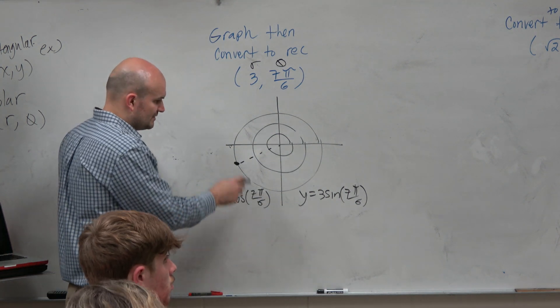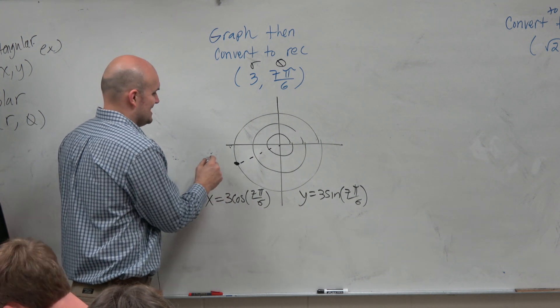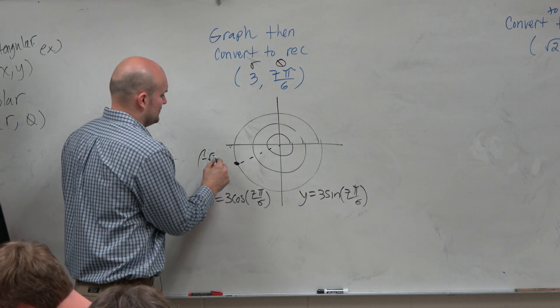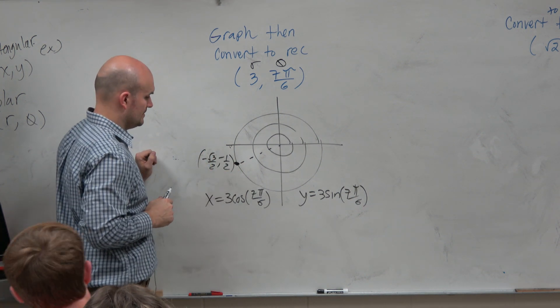So 7 pi over 6, if we think about what is this coordinate point, you've got to remember that unit circle. This is going to be a negative square root of 3 over 2, comma, negative 1 half.